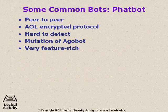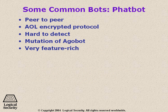Fat Bot is a slightly different one. It uses peer-to-peer technology and an AOL encrypted protocol for communications. It's pretty hard to detect and is a variant of the ubiquitous Agobot, of which there are so many variants. Fat Bot is pretty feature-rich — it will allow you to do just about anything as far as mutating itself or communications options. Using peer-to-peer adds another range of flexibility.